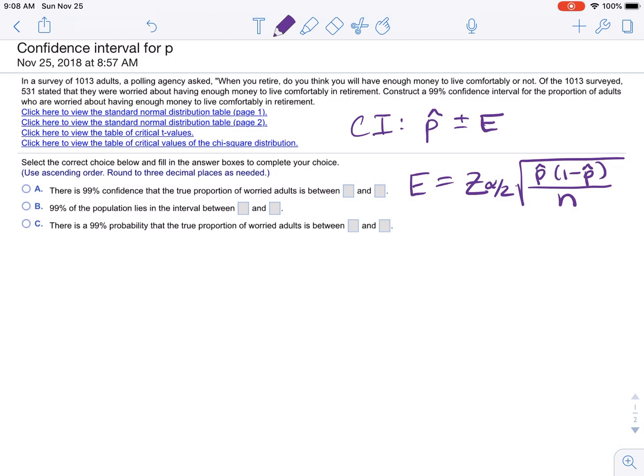531 stated that they were worried about having enough money to live comfortably in retirement. Construct a 99% confidence interval for the proportion of adults who are worried about having enough money to live comfortably in retirement.